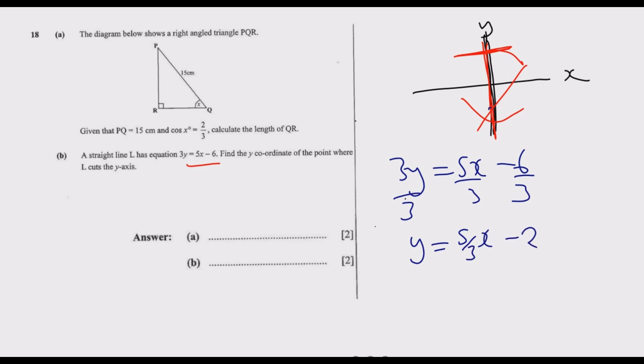At the point where the curve cuts the y-axis, x equals zero. So y equals 5 over 3 times 0 minus 2. Anything times zero is zero, so y equals negative 2. The y-coordinate is negative 2.